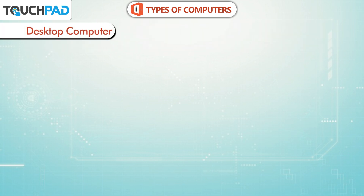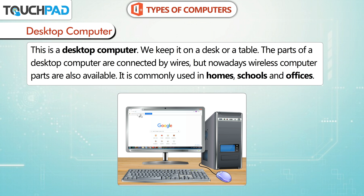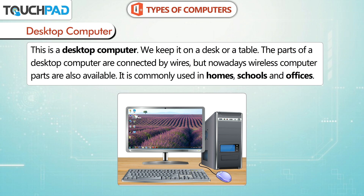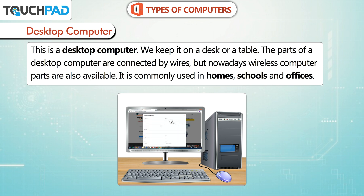Desktop Computer. This is a desktop computer. We keep it on a desk or a table. The parts of a desktop computer are connected by wires, but nowadays wireless computer parts are also available. It is commonly used in homes, schools and offices.